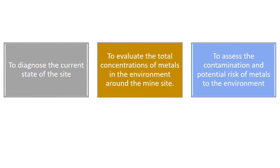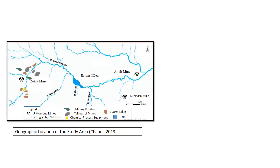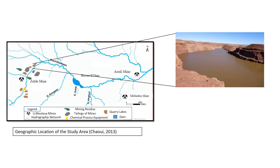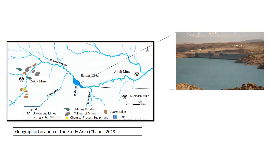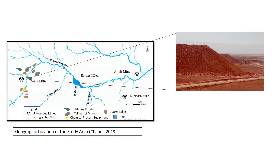The present study will focus on the abandoned mine of Zayda, with the aim to diagnose the current state of the site, to evaluate the total concentrations of metals in the environment around the mine site, and to assess the contamination and potential risk of metals to the environment. The Zayda mine is characterized by more than seven quarry lakes, chemical process equipment left in situ, three tailings, and a hydrographic network named the Malouia River and its affluents, located a few meters from the tailings, through which the network supplies and sends mining residue downstream.